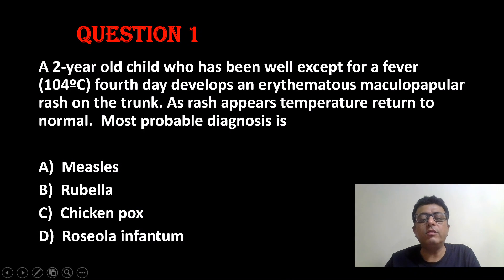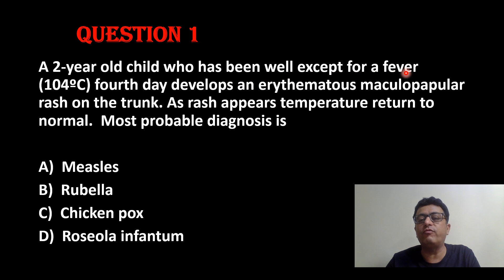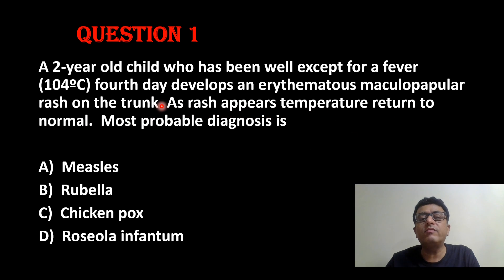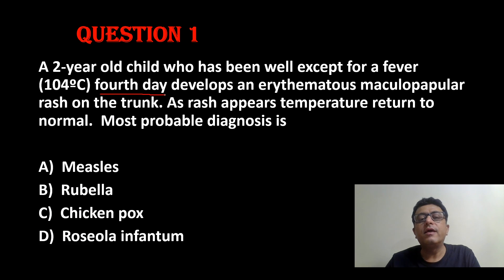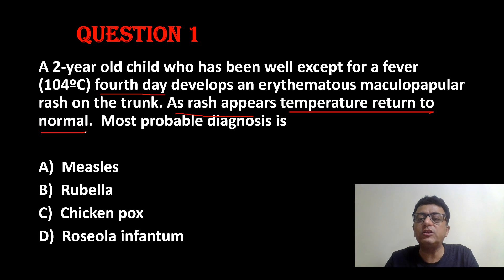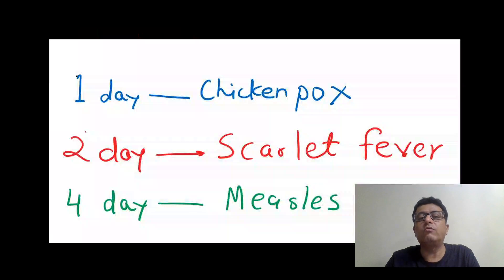Come to the first question. Read this question carefully. A two-year-old child who has been well except for a fever develops a rash on the fourth day — an erythematous maculopapular rash on the trunk. As the rash appears, temperature returns to normal. The key point is rash on the fourth day and as rash appears, temperature returns to normal. So what is the approach?